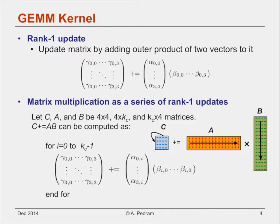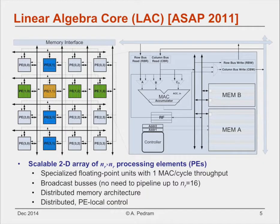As you can see in the picture, a block of A is multiplied by block of B to update a block of C. Our goal was to design a linear algebra core that is optimized for rank-one update. The key features are distributed control, distributed memory, and broadcast buses as means of streaming data.